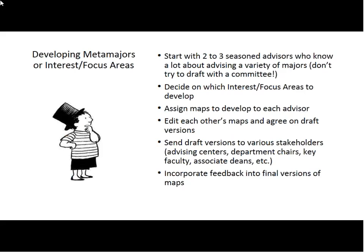How did we develop the meta-majors or interest focus areas? We started with two seasoned advisors — your campus might do two or three depending on the number of focus areas you want to develop. Do not start with a committee; a committee will bog down the process tremendously. If you've got some advisors who know how to advise a variety of majors, you can accomplish the first draft with just a couple of good advisors who know what they're doing.